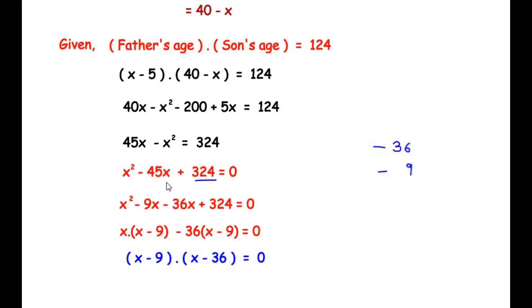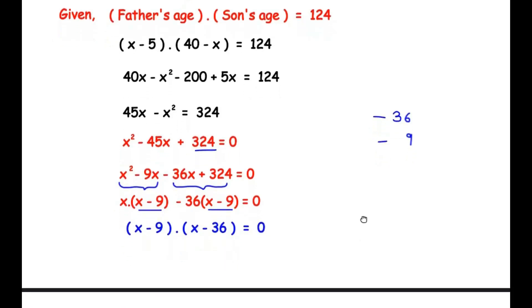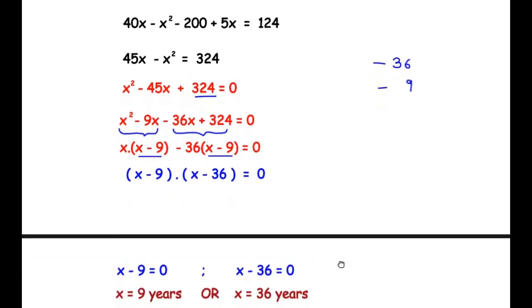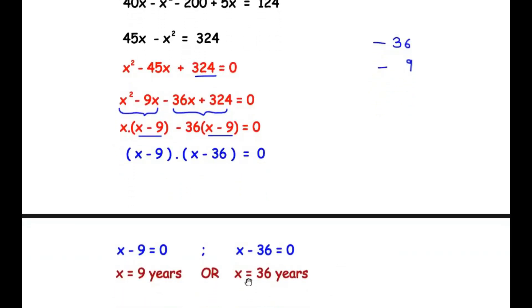Grouping the first two terms and the last two terms: from the first two terms, x is a common factor, giving x(x minus 9). From the last two terms, negative 36 is a common factor, giving negative 36(x minus 9) equals 0. Since (x minus 9) is a common factor, we pull it out, giving (x minus 9)(x minus 36) equals 0. Equating each factor to zero: x minus 9 equals 0 or x minus 36 equals 0, so x equals 9 or x equals 36.